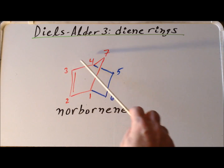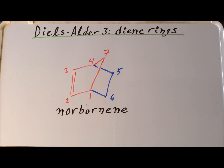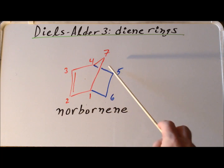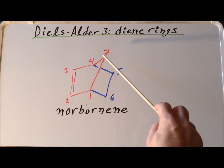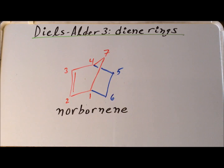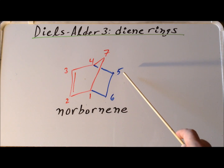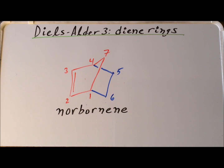We start at the first bridgehead carbon and then take the shortest path to get to the second bridgehead carbon, numbering the carbons consecutively: 1, 2, 3, 4. Then we continue around the first ring: 5, 6, and then we begin numbering between the bridgehead carbons for the second ring, giving us carbon number 7. The carbons in red came from the diene, cyclopentadiene, and carbons 5 and 6, colored in blue, came from the dienophile, ethylene.